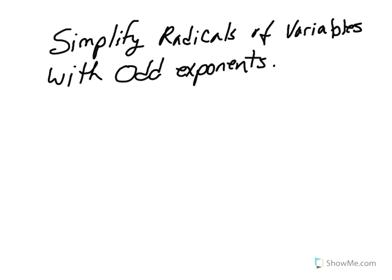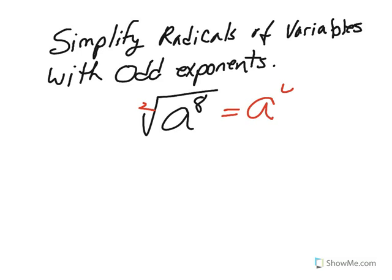In this lesson, we're going to look at simplifying radicals of variables with odd exponents. In the previous lesson, we learned how to do the square root of a to the eighth by taking the index of 2, dividing it into the eighth, and getting a to the fourth as our answer.